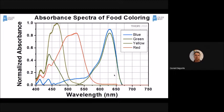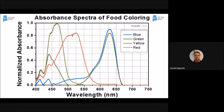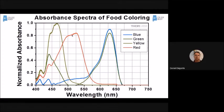What if you're studying red food coloring instead of blue? You just pick a different wavelength. This has actually been on the AP exam before — they asked what do you do if you have red food coloring, and the answer is you pick a different wavelength. In order to understand the concentration of the blue dye, we need to know what wavelength of light to shine on it, and then we can measure how much it's absorbed.